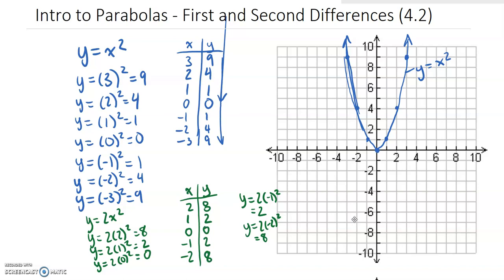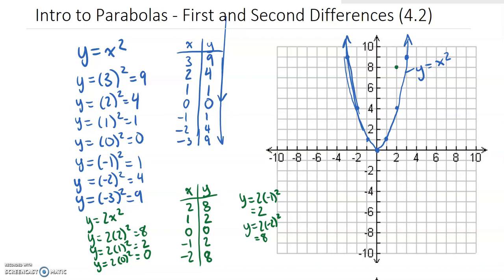Plotting those points, we graph (2, 8), (1, 2), (0, 0), and because of symmetry we can tell what the other ones are on the other side. It's really much the same as the other parabola, but with one key distinct difference: the y values have all been doubled. We vertically stretch this, as we're going to investigate over the days to come. Those are the two graphs that give us a basis of what these look like. Now let's go ahead and do some things with first and second differences.